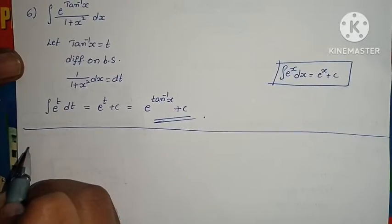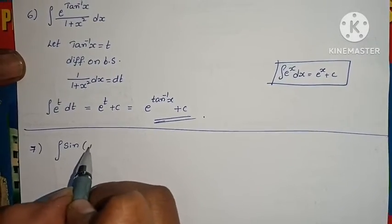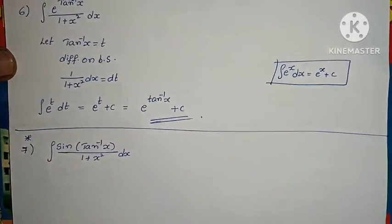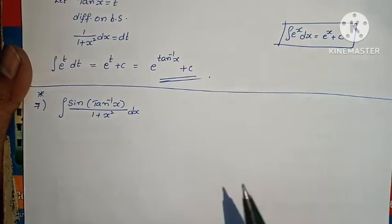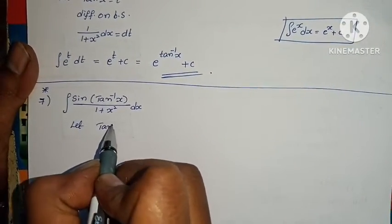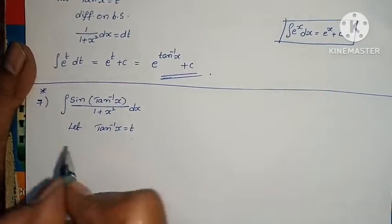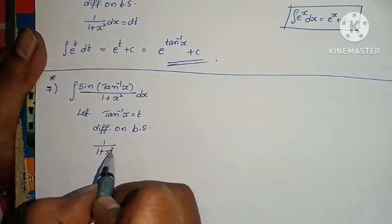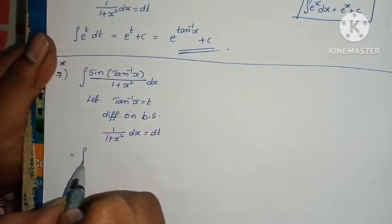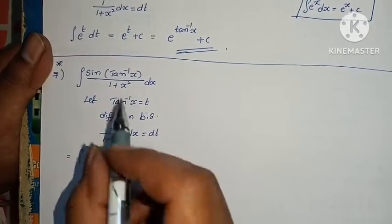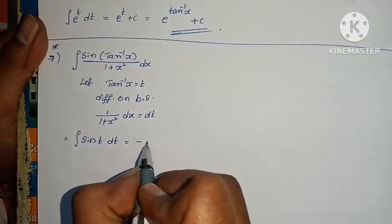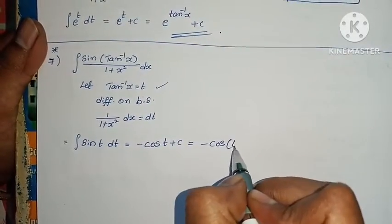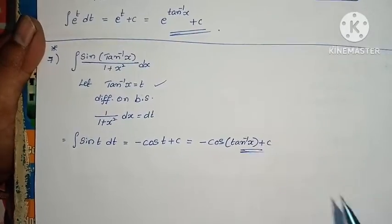Seventh question: integral of sin(tan⁻¹x) / (1 + x²) dx. This is important for previous question papers (2 marks). Let tan⁻¹x = t. Differentiating: 1/(1 + x²) · dx = dt. Substituting: integral of sin(tan⁻¹x) · 1/(1 + x²) dx becomes integral of sin(t) dt = minus cos(t) + c. Substituting back t = tan⁻¹x: answer is minus cos(tan⁻¹x) + c. Problem complete.